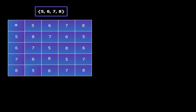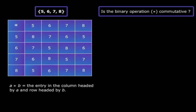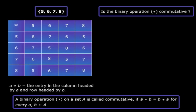In the operation table, we have denoted A star B as the entry in the column headed by A and the row headed by B. Now what we need to find out is whether the binary operation star is commutative or not. A binary operation star on a set A is called commutative if A star B equals B star A for every A and B that belong to set A.